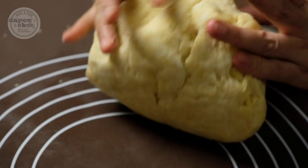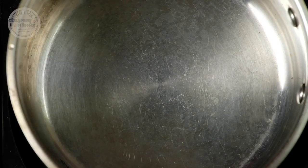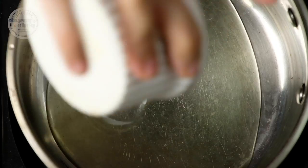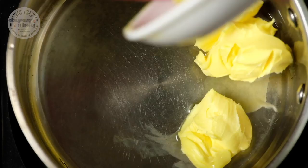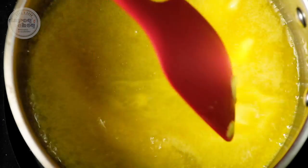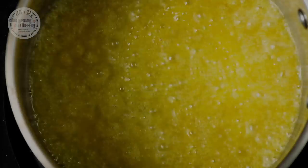Sekarang kita nak buat dough biasa. Panaskan margarin dengan minyak tadi dulu. Masukkan minyak and masukkan margarin. Kita kacau-kacau dia, bagi margarin tu cair. Dah, tutup api. Kita pikan.